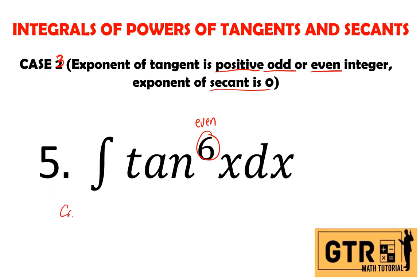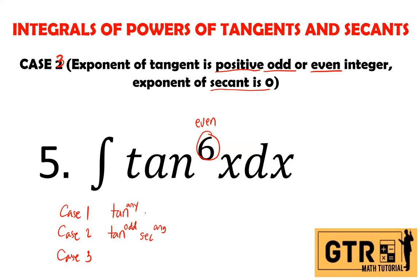Let's have a quick review of case 1, case 2, and case 3. For case 2, the exponent of tangent is odd and the exponent of secant is any number. For case 1, the exponent of tangent is any number and the exponent of secant is even. For case 3, the exponent of tangent is odd or even and there is no secant.